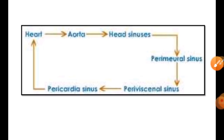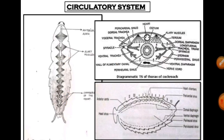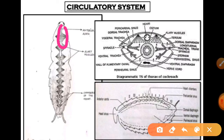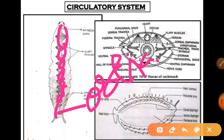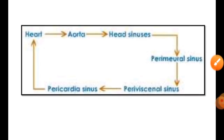The heart chambers contract one after the other rapidly — all chambers are attached to each other. As you can see in the diagram, these are the different chambers attached to each other with the help of openings called ostia.